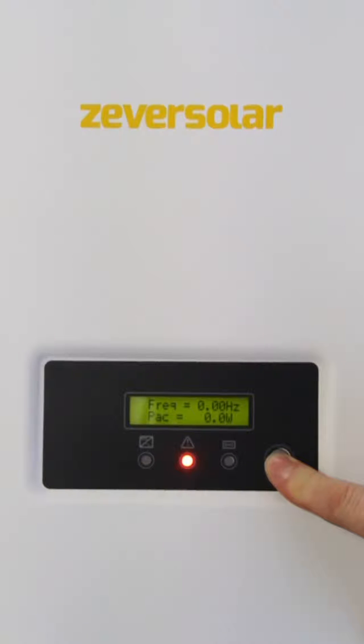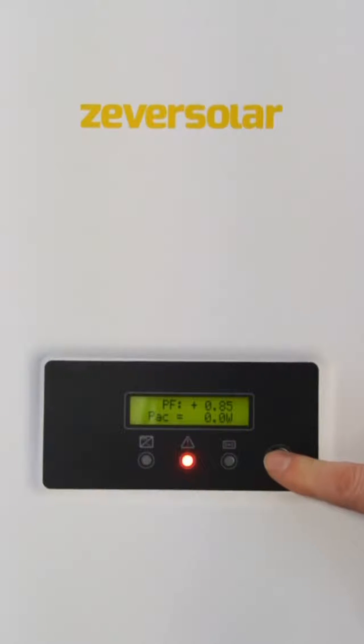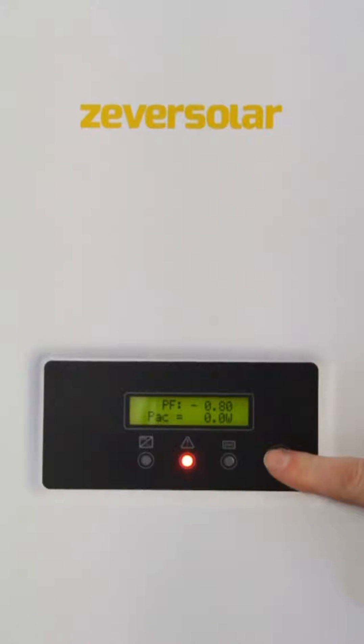Hold the button for 10 seconds. We can now set a power factor by cycling through with the button. Here we would be setting a 0.8 static leading power factor. Here we would be setting a unity power factor. And here a 0.9 lagging power factor.